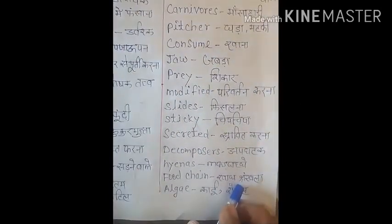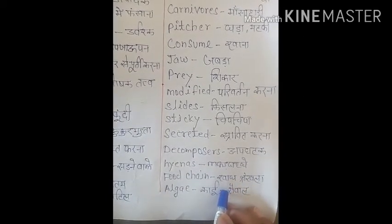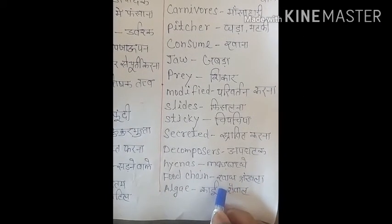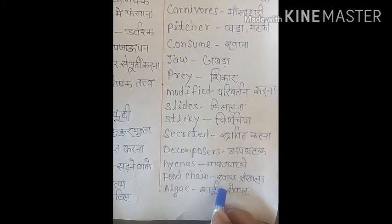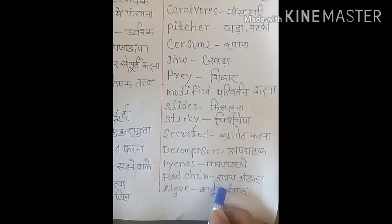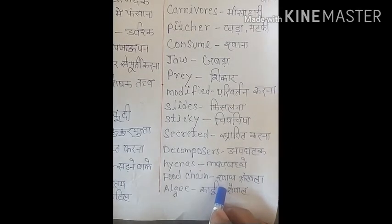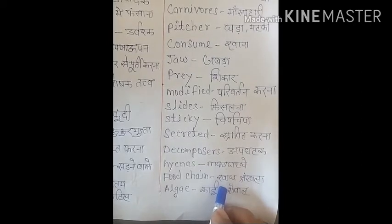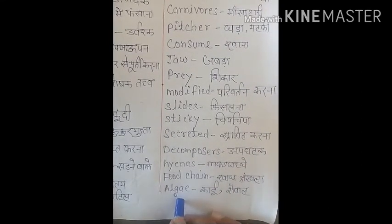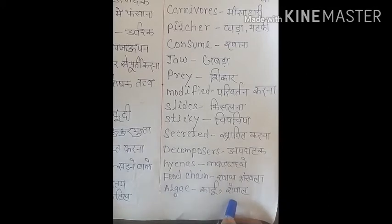Food chain kya hoti hai — jaise ek food chain di: grass hai, usko grasshopper khaata hai, phir rat khaata hai, rat ko snake khaata hai, aur saap ko hawk khaata hai — food chain ho gaya. Aise algae hai, algae ko mosquito khaata hai, mosquito ko dragonfly khaata hai, dragonfly ko fish khaata hai, aur fish ko raccoon kha jaata hai. Algae means 'kai ya shaiwal' — yeh bhi ek plant ka naam hai.